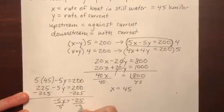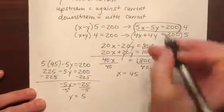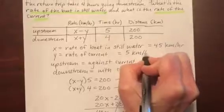Dividing by negative 5 gives me y equals 5. And so that's the rate of the current. 5 kilometers per hour.